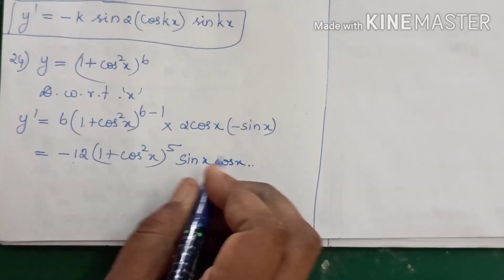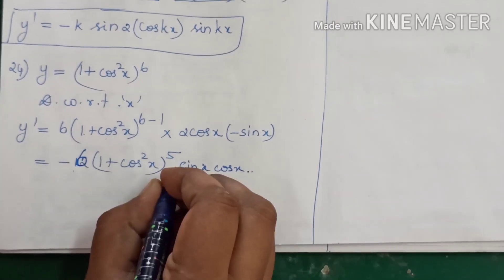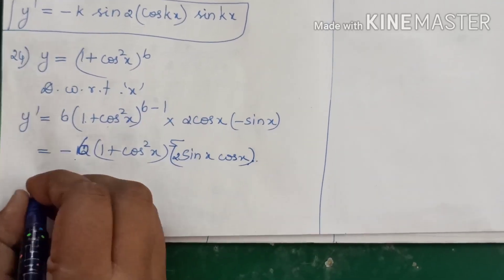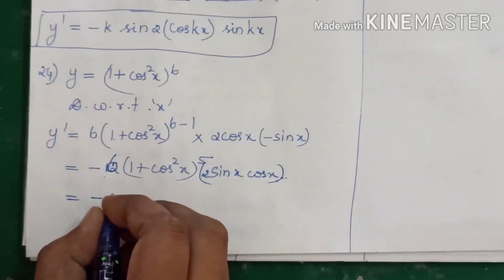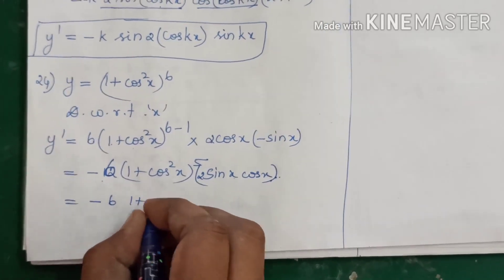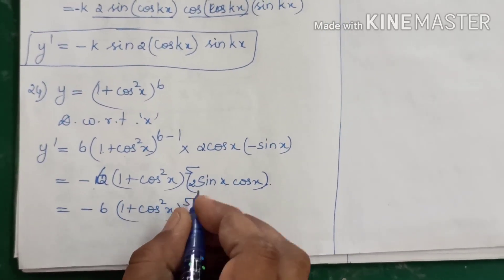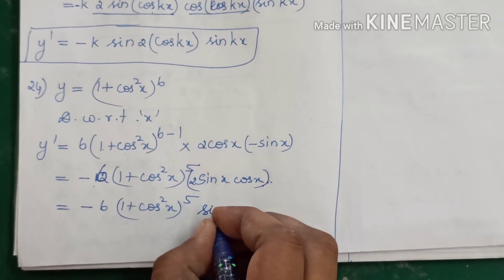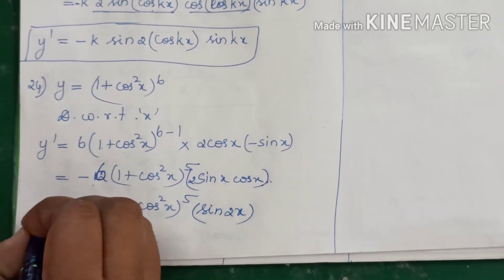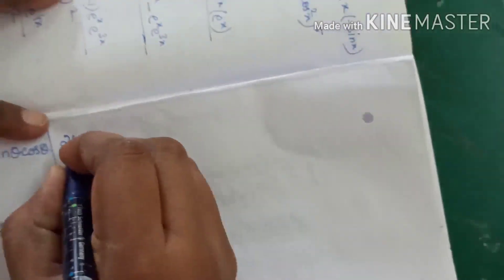We can simplify further: y dash equals minus 6 into (1 + cos²x) to the whole power 5, into 2 sin x cos x, which is nothing but sin 2x. So the final answer is y dash equals minus 6(1 + cos²x)^5 · sin 2x.